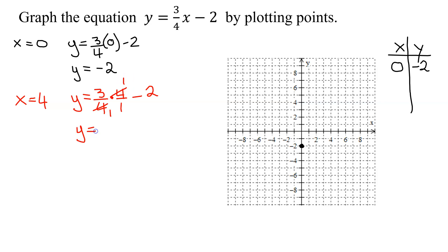So y equals 3 times 1 is 3, over 1 times 1 is 1. 3 over 1 is 3. So I'm going to get 3 minus 2, which is 1. So my next point is (4, 1).